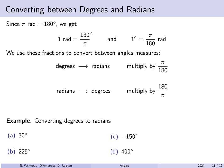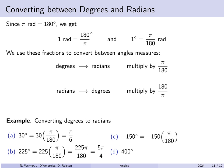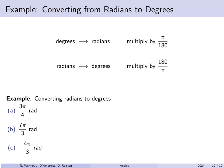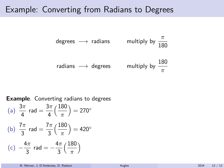To convert the following angles from degrees to radians, multiply by π/180. So 30 × π/180 = π/6. Then 225 × π/180 = 5π/4 radians. Negative 150 × π/180 = −5π/6 radians. And 400 × π/180 = 20π/9 radians. Similarly, converting from radians to degrees by multiplying by 180/π: 3π/4 becomes 135 degrees, 7π/3 becomes 420 degrees, and −4π/3 becomes −240 degrees.